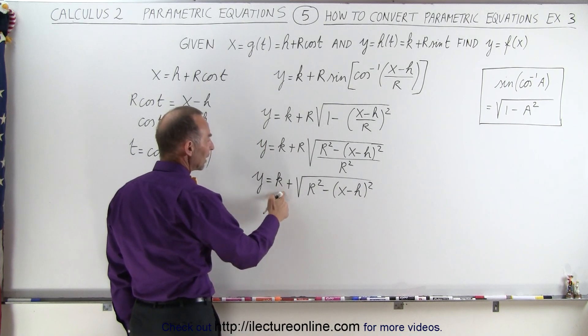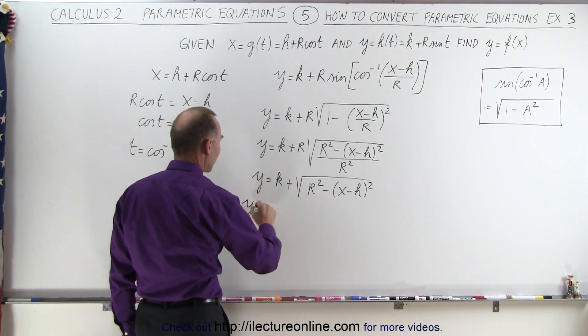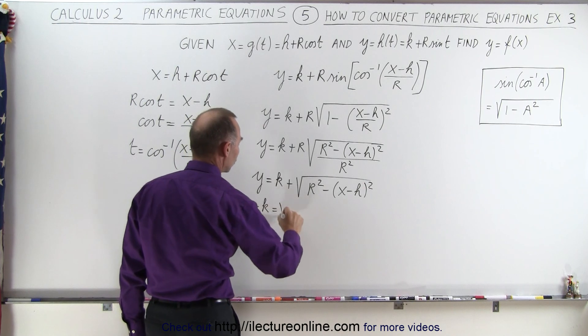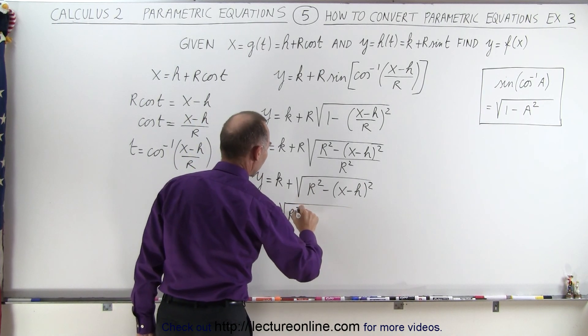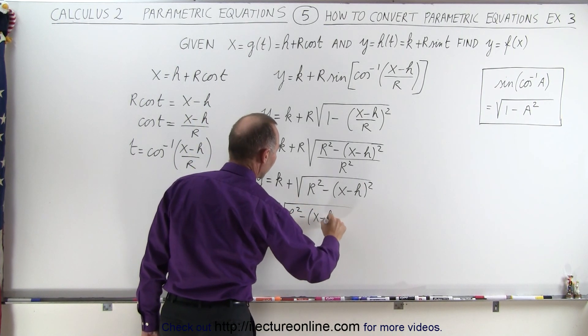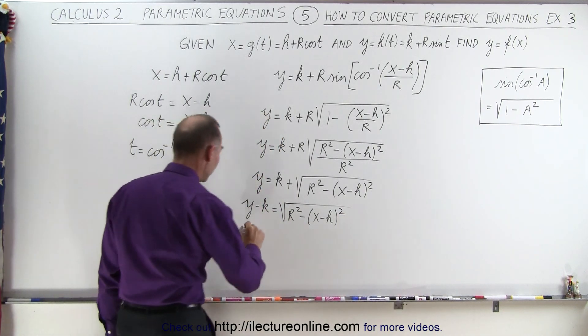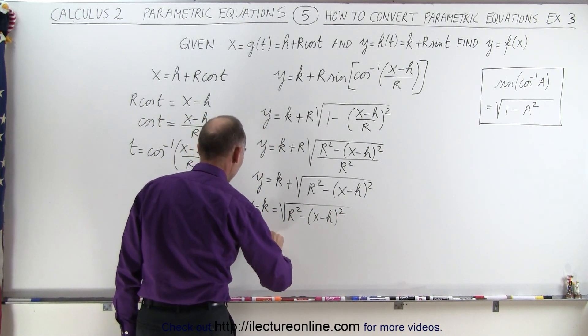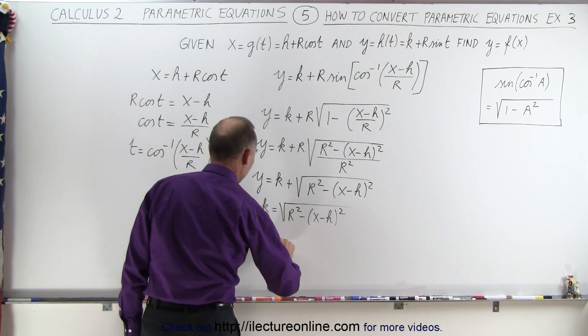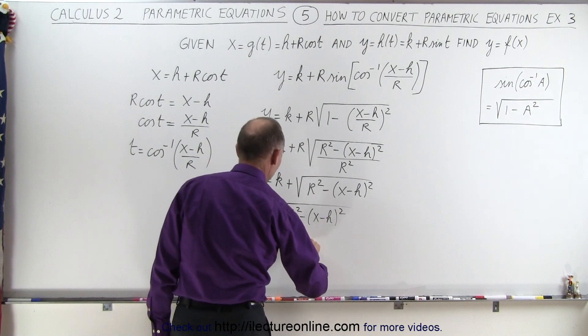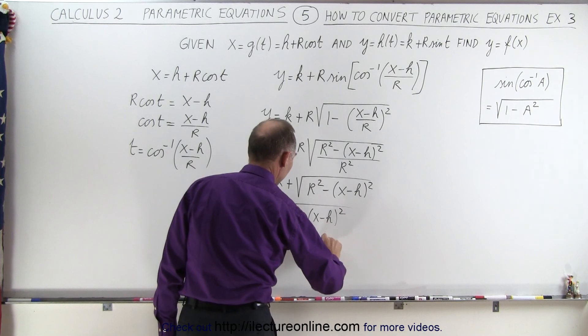Next, what we're going to do is move the K to the other side. So we have Y minus K is equal to the square root of R squared minus X minus H quantity squared. And now if we square both sides, we get the following. We get Y minus K quantity squared is equal to R squared minus the quantity X minus H squared.